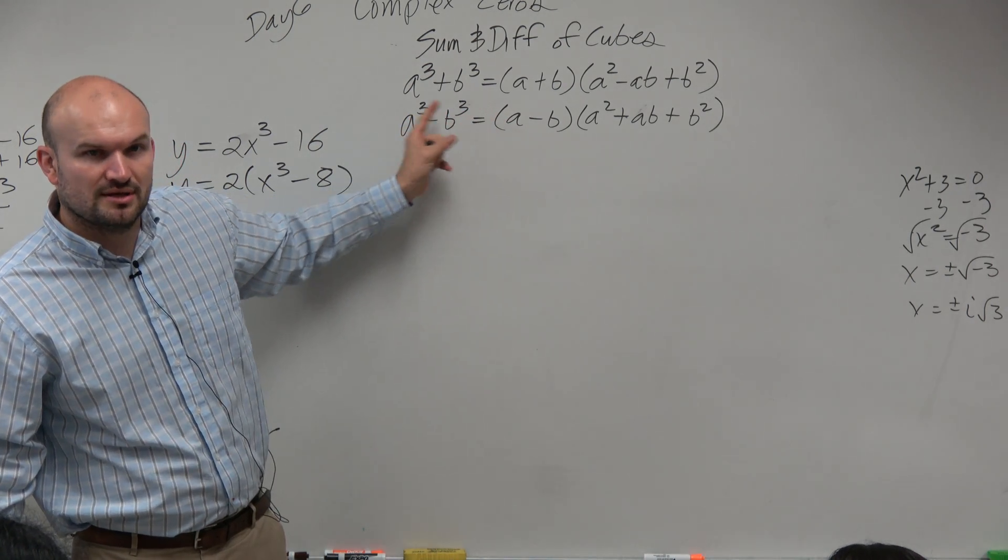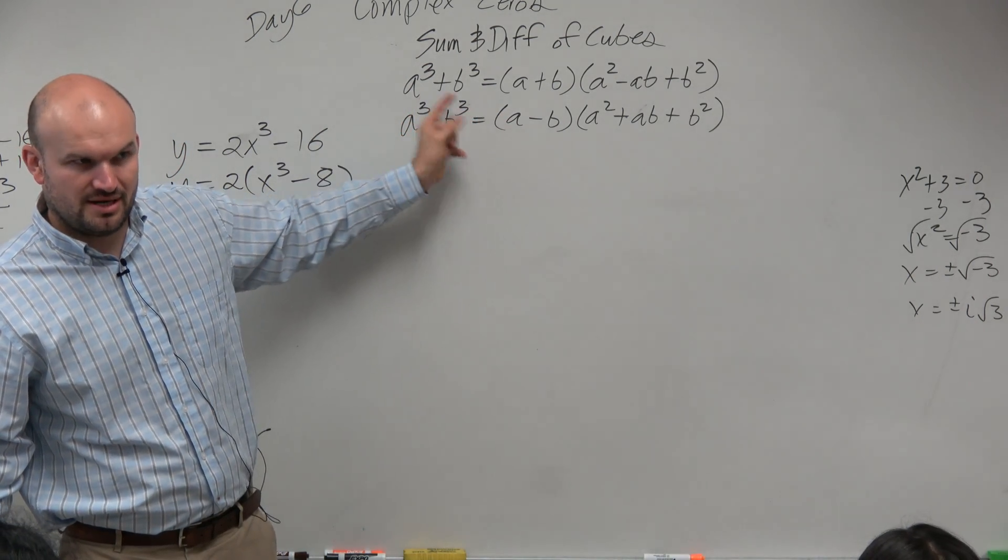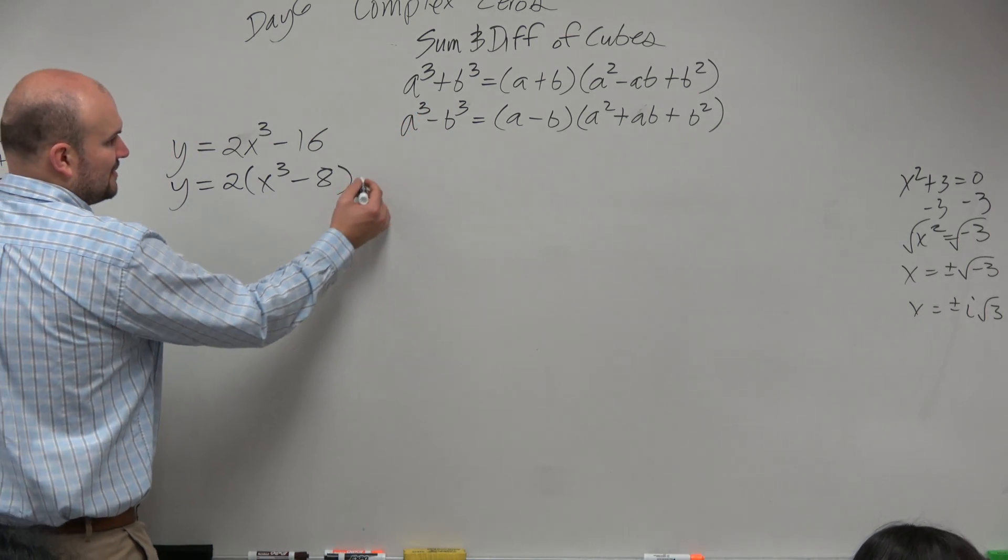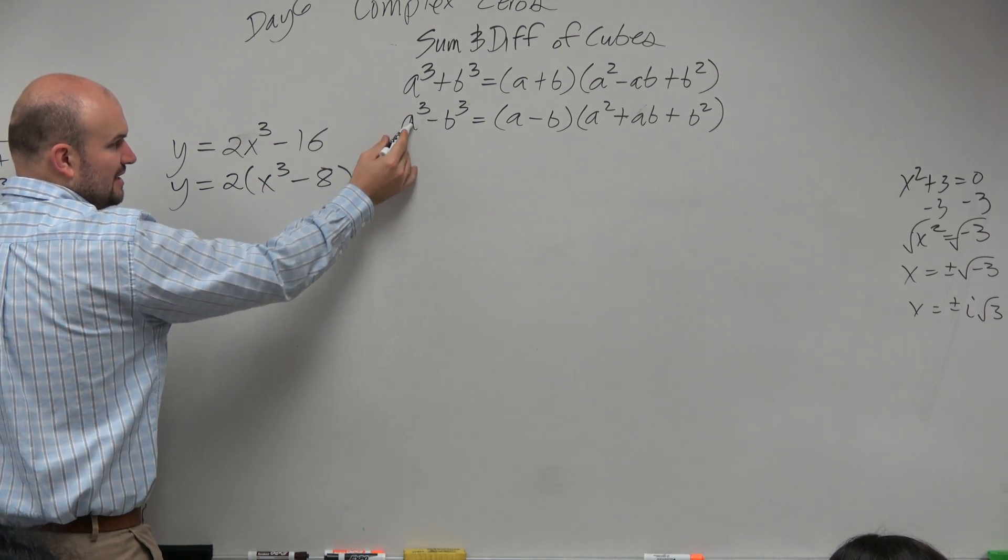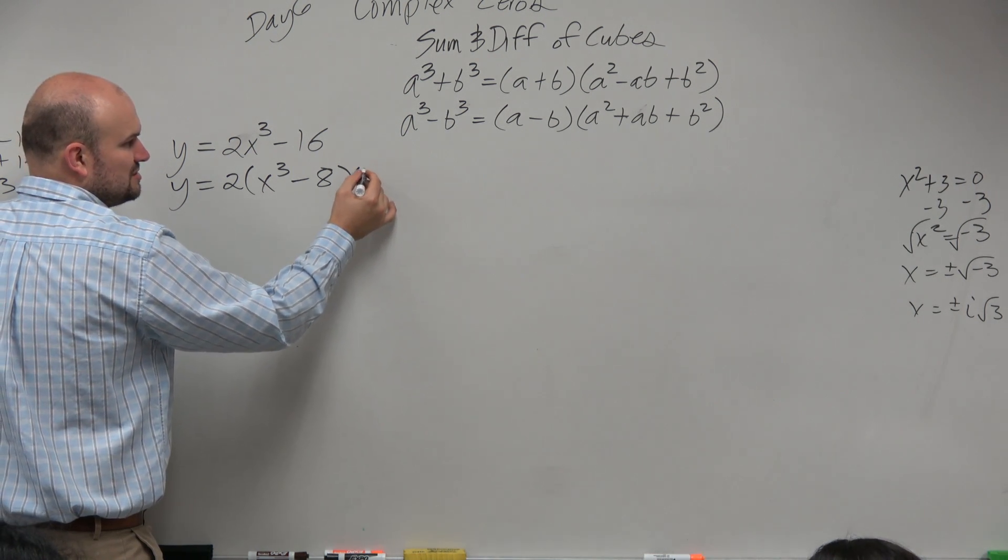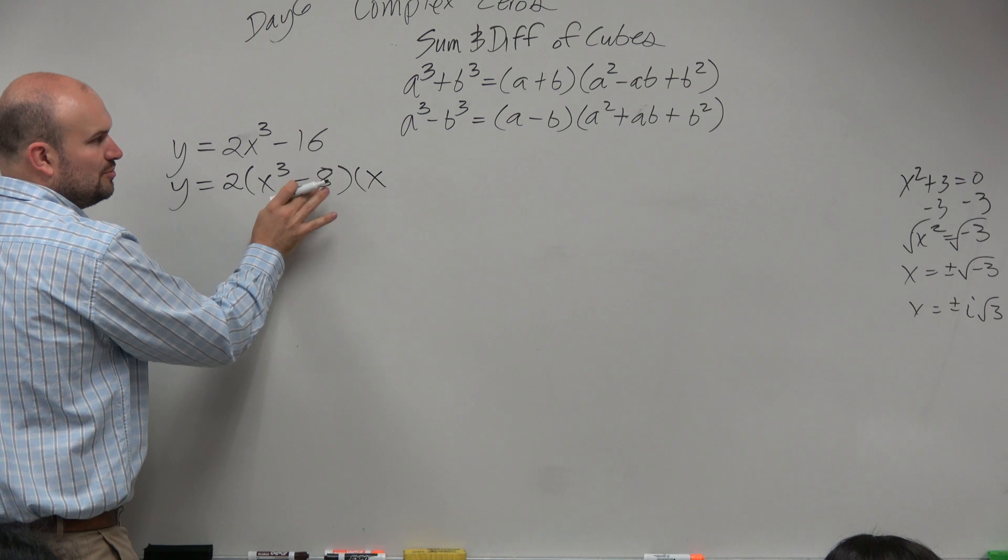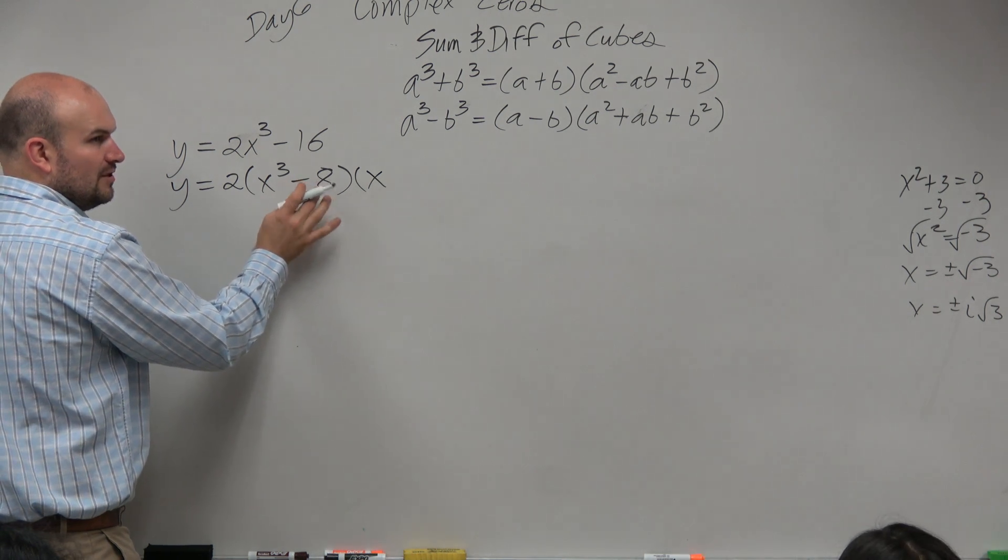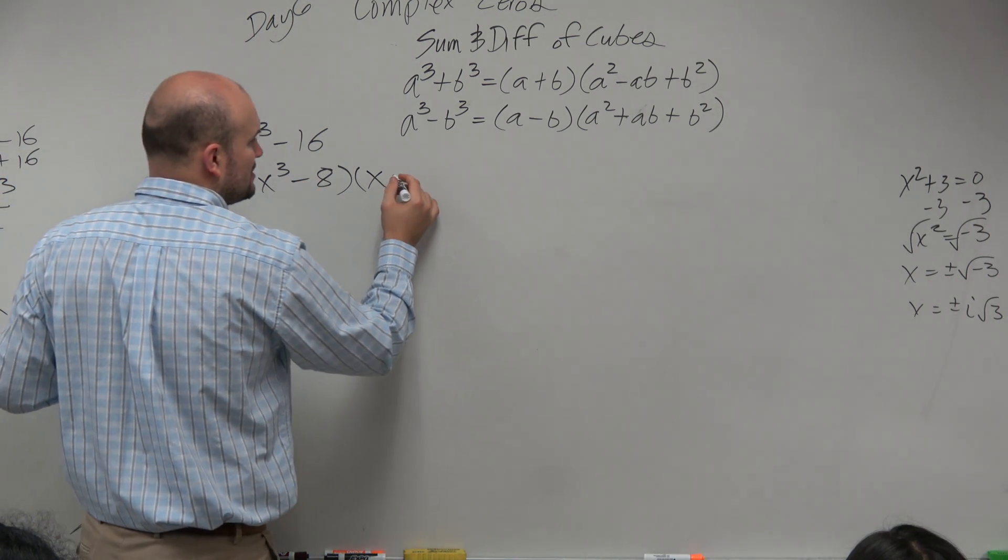Well, they're just the cubed root of a cubed, right? So if I'm saying x cubed is like a cubed, that means a is just going to be the cube root of x cubed, which is x. What's the cube root of 8? What number multiplied by itself three times gives you 8? 2.